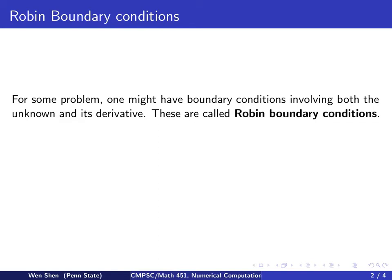We now go through an example with a Robin boundary condition. Robin boundary condition is a boundary condition that involves both the unknown and its derivative. It's kind of a mixed boundary condition. This could happen in some physical problems.